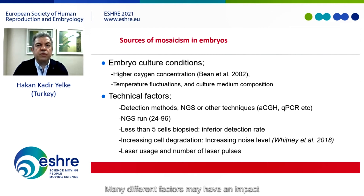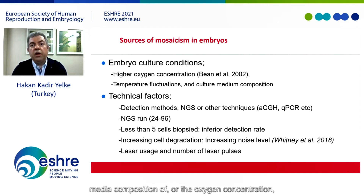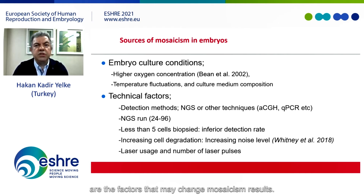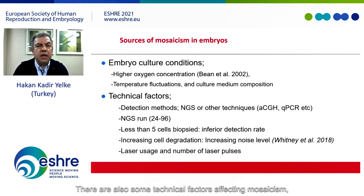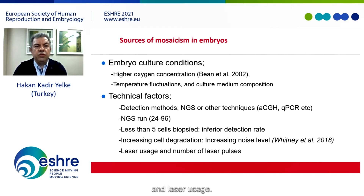Many different factors may have an impact on embryo mosaicism. Culture conditions like temperature, pH, media composition, or oxygen concentration are factors that may change mosaicism results. There are also some technical factors affecting mosaicism: the detection methods, whether NGS is in use or not, number of cells, cell numbers in the specimen, cell degeneration, and laser usage.